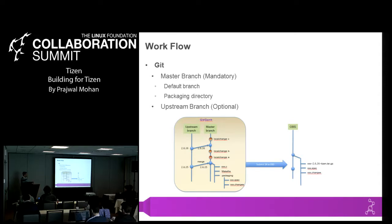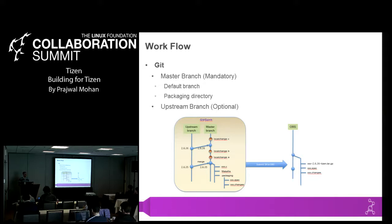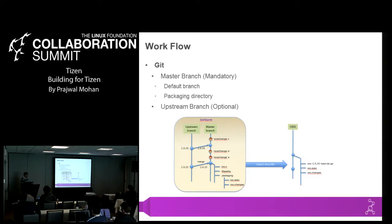The upstream branch would not have any packaging information because most packaging information would be distribution-specific, and the packaging directory would have Tizen-specific packaging metadata in the master branch. Once all the changes have been checked into the master branch, we can use the tools I'll be talking about to submit a request to OBS to be included in the build. We bifurcated source from build so developers don't have to check in changes to the mainline when they're not ready, while still having flexibility to collaborate on the master branch.